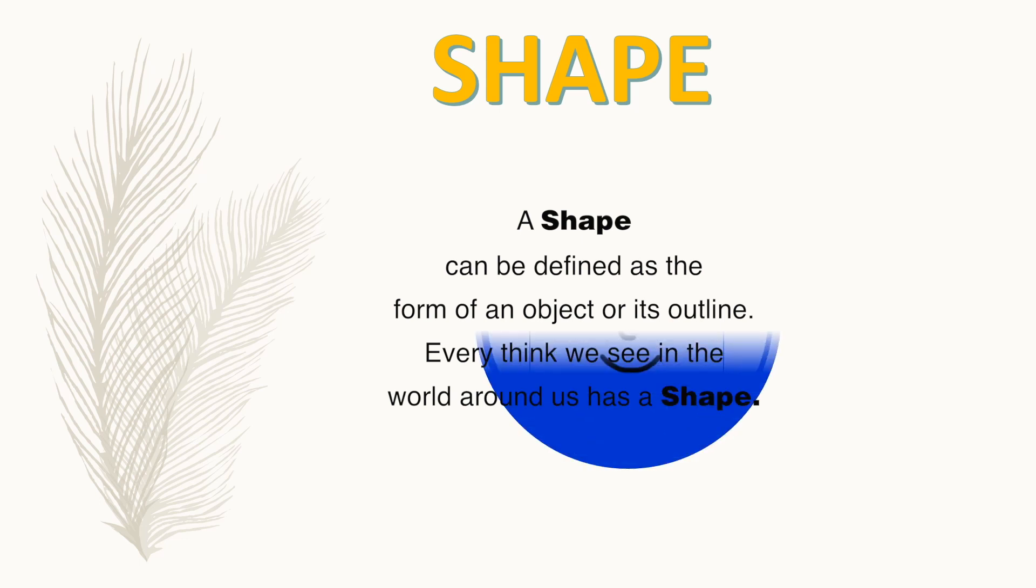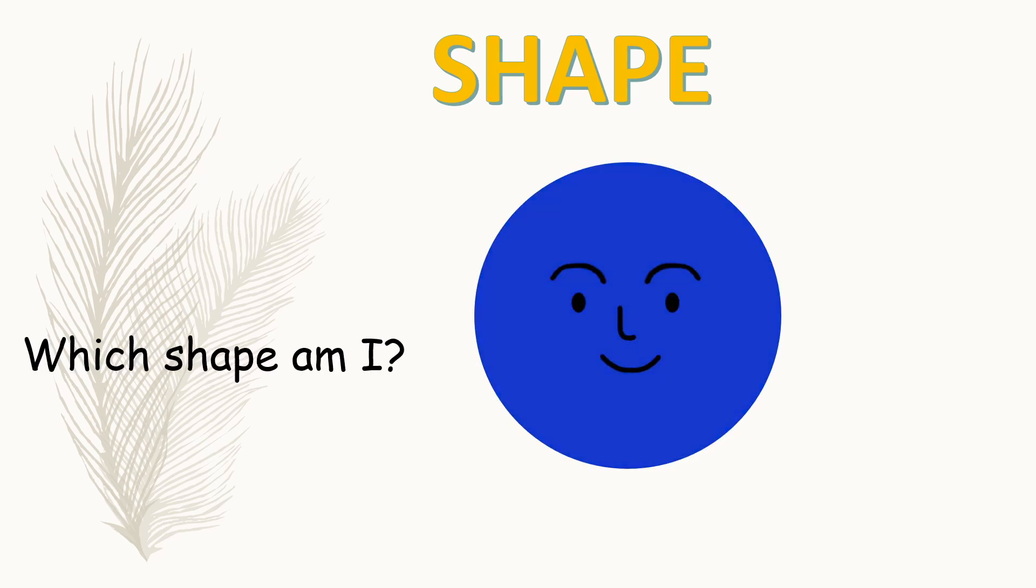Can you guess which shape am I? I am a circle. A circle is a shape that is made up of curved lines. It does not have any side or corner. It is a closed curve.